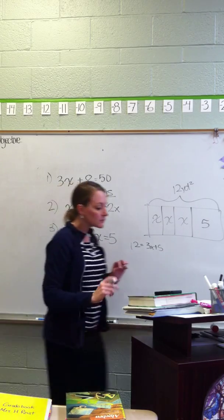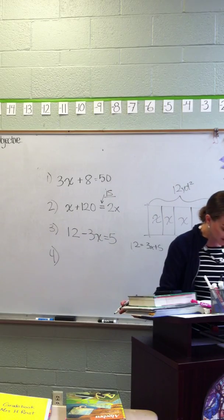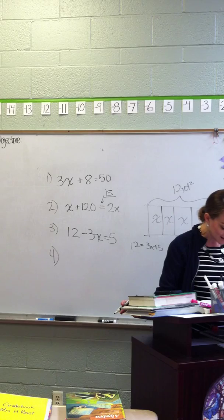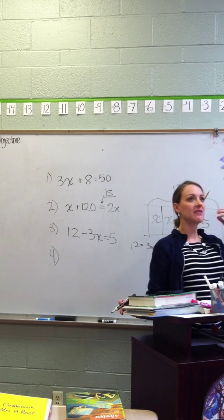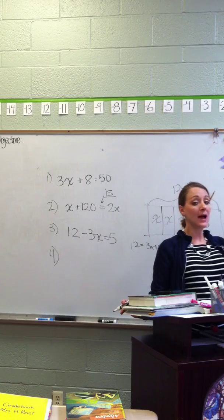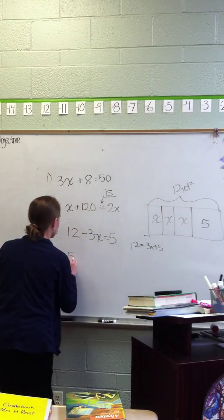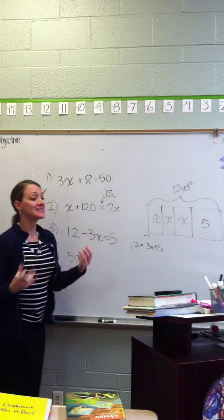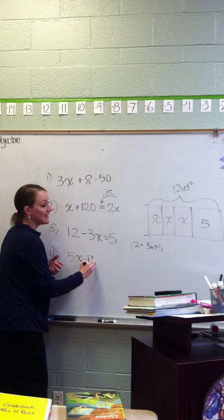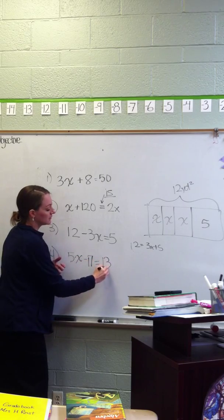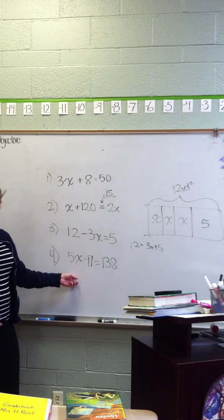Number 4. The product of a number and 5 decreased by 7 is 138. Alright. The product of a number and 5, how do I begin that? 5X. 5X. Decreased by 7. Minus 7. 17. Oh, 17 is 138. How did we do on that one? That one's not so bad? I got it. Yeah. Good.